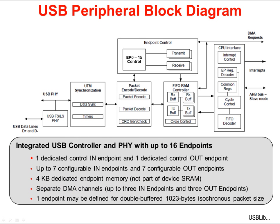The block diagram for the USB peripheral is shown at the top of this slide. This is an integrated USB controller and PHY or physical interface that offers up to 16 endpoints. Enumeration requires a dedicated control input and dedicated control output endpoint. There are up to 7 additional configurable input endpoints and 7 additional configurable output endpoints. The controller module has 4K of dedicated endpoint memory which is not part of the device's SRAM. DMA is supported on 3 separate in endpoints and 3 separate out endpoints. For bursty data, one of the endpoints can utilize a 1023-byte, double-buffered buffer from the 4K memory.